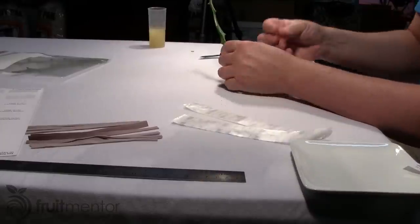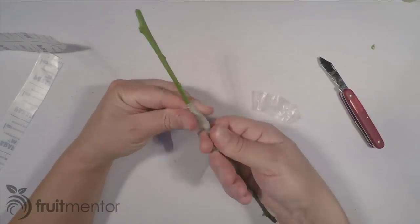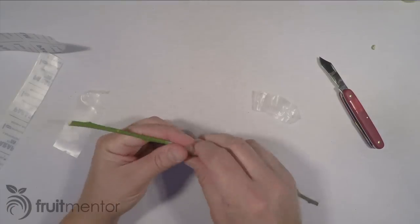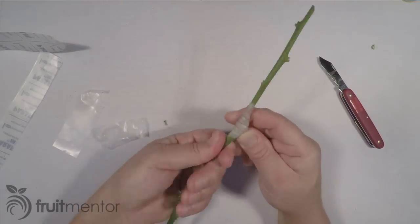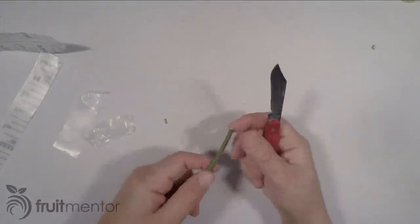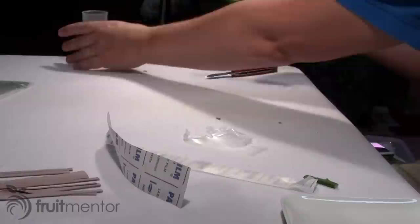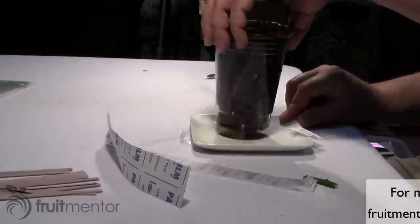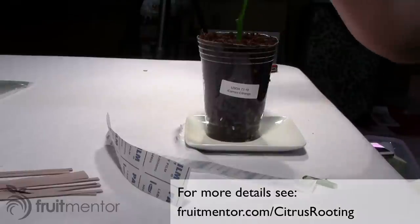I wrapped the graft union with a product called Parafilm M to seal the graft and hold it in place. Next, I wrapped the graft with a rubber band. The next step is to cut off the bottom of the rootstock, dip it in the rooting hormone, and then plant it. For further details, see fruitmentor.com/citrus-rooting.